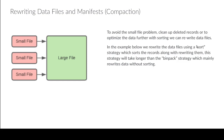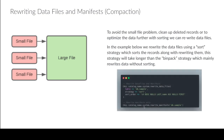You also have a sort strategy where it sorts the data when it rewrites it, which allows for faster queries because looking through data sorted on columns you filter on frequently results in much better performance. In the call procedure — call catalog_name.system.rewrite_data_files — you specify the table, set the strategy to sort, and define your sort order. For example, sort first by ID descending, then by name ascending nulls first. It sorts by ID first, then within matching IDs it sorts by name.